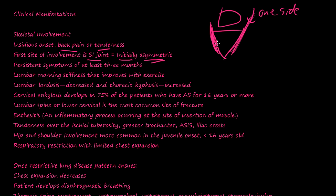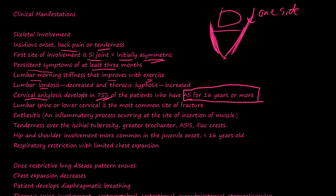Over time it will go to both sides. Persistent symptoms last at least three months. You have morning stiffness — when the patient wakes up there's back pain, but it improves with exercise. Lumbar lordosis decreases and thoracic kyphosis increases. Cervical ankylosis — fusion of the cervical spine — develops in 75% of patients who have AS for 16 years or more. That means 75% of those patients will have complete fusion of the cervical spine.